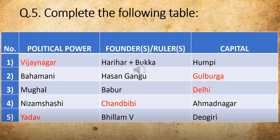Three options will be given. You have to click at the correct option — the founder of Vijayanagar Kingdom — so you are going to click at Hariyar and Bukka. Or in the same way it will be asked for the capital: Political power — Vijayanagar — and its capital.